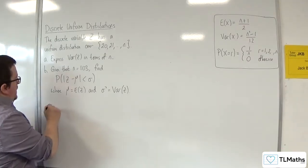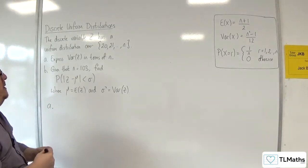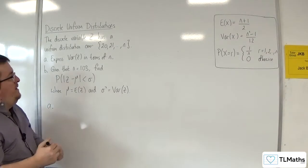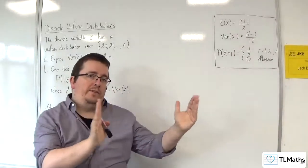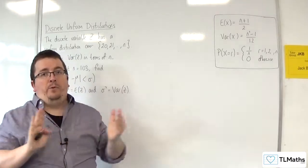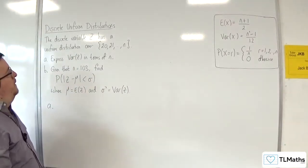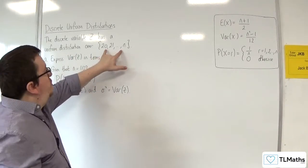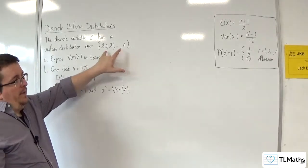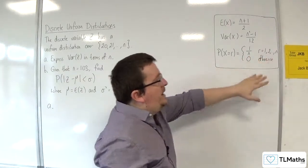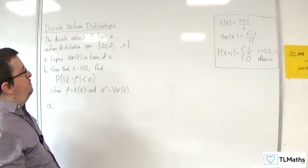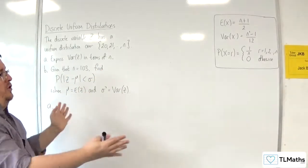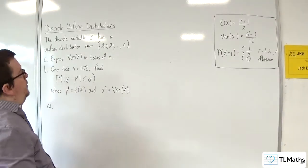For part A, we know that the variance will be maintained if we just translate the variables left and right. This distribution will have the same variance as this one if the number of terms is the same, because they're both going up in 1s, so it's just going to be down to the number of terms that we've got.